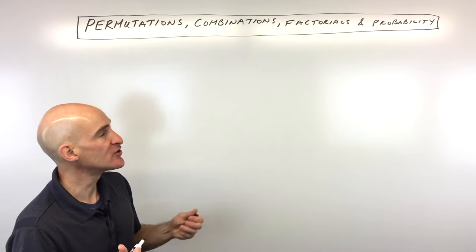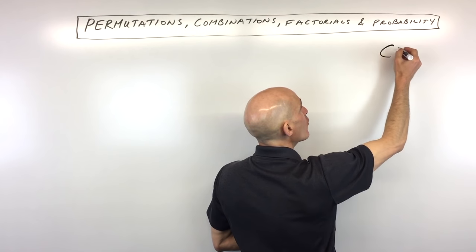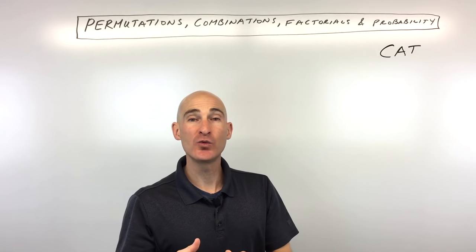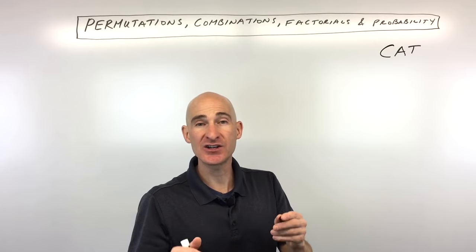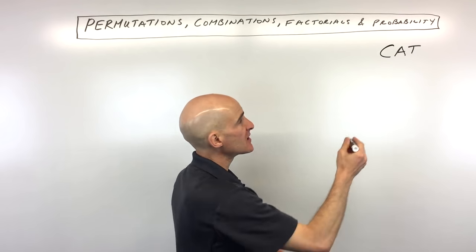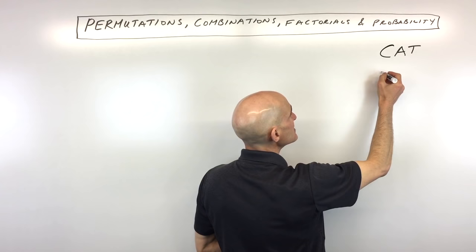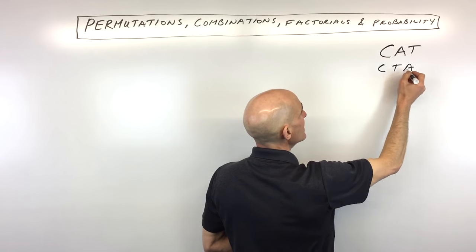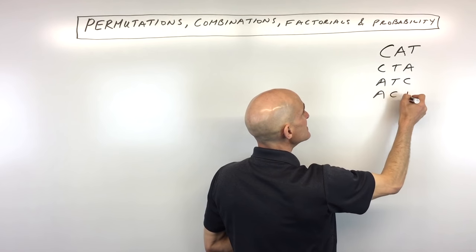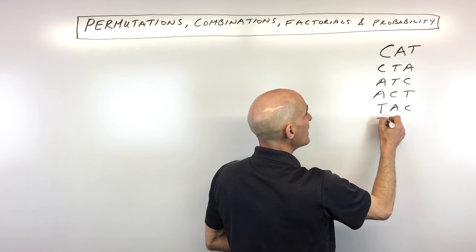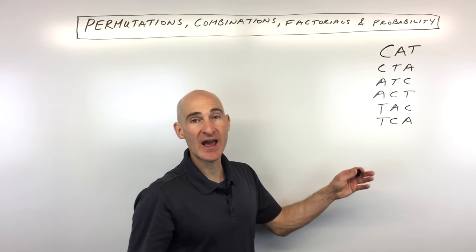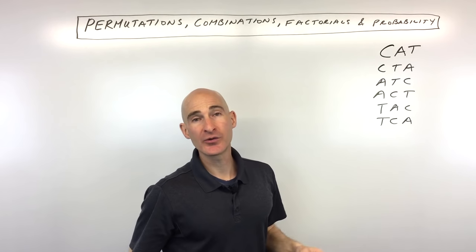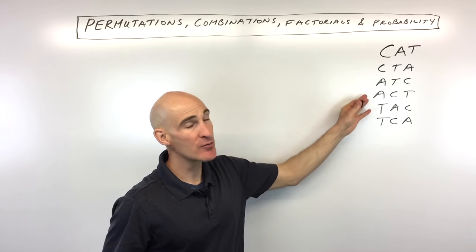When we talk about a permutation, let's look at an example. Take the word CAT — there are three letters. We want to see how many different ways we could rearrange these three letters using all three. You could write C-A-T, C-T-A, A-T-C, A-C-T, T-A-C, and T-C-A. So there are actually six different ways, meaning six permutations or orderings.